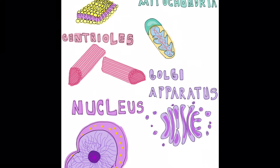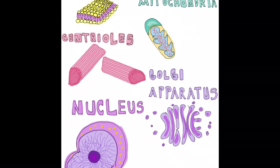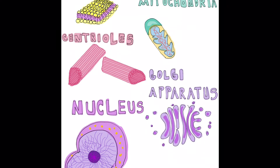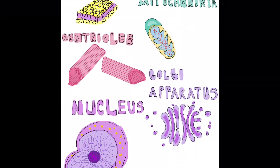Lysosomes: breakdown of macromolecules. Peroxisomes: digestive enzymes that break down toxic materials in the cell. And now we're talking about the nucleus. The nucleus is the control center of the cell — it's the center. The nuclear envelope is the membrane barrier that separates the nucleus from the cytoplasm.